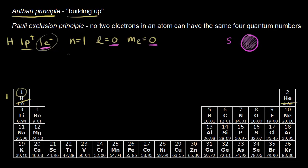We write the electron configuration as 1s¹. This first '1' refers to the energy level — the shell, n equals one. The 's' tells us the electron goes into an s orbital. And the superscript '1' tells us how many electrons are in that orbital — just one. So 1s¹ means one electron in an s orbital in the first energy level.